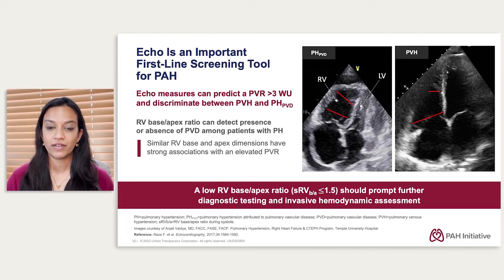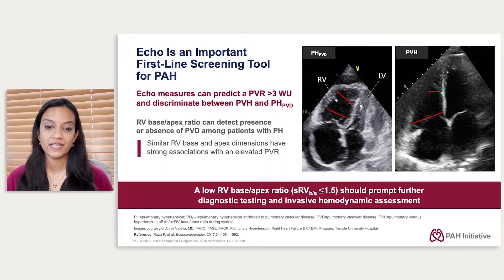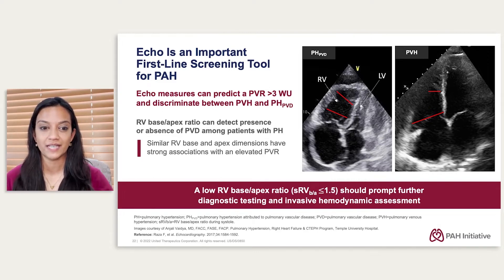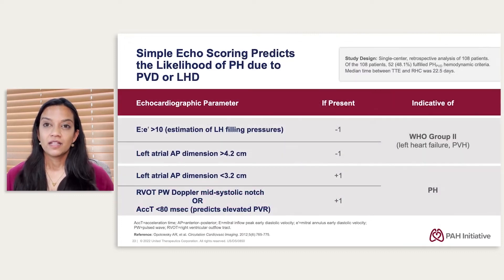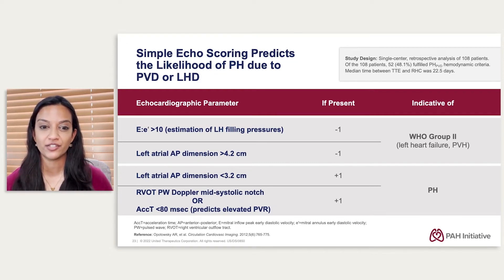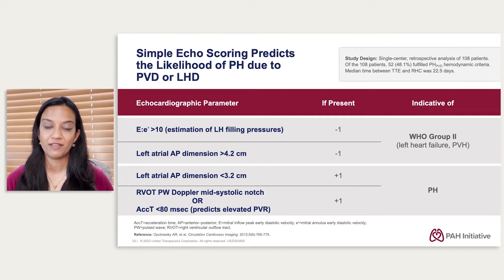In pulmonary arterial hypertension, that base-to-apex ratio is much lower and the apical dimension is much wider. So if that base-to-apex ratio is less than 1.5, or more simply stated, you look at that heart and the apex of the right ventricle is wide open, you're immediately thinking this is an elevated PVR, and you're moving toward urgent hemodynamic assessment. Let's add to our toolbox of clues to predict if this is pulmonary arterial hypertension — pulmonary vascular disease — or left heart disease. This is the echo score paper we published about 10 years ago.